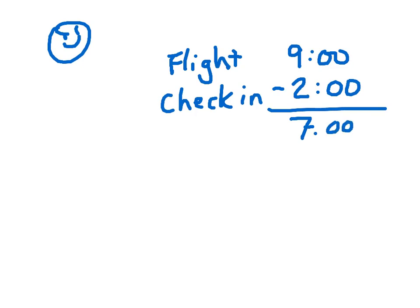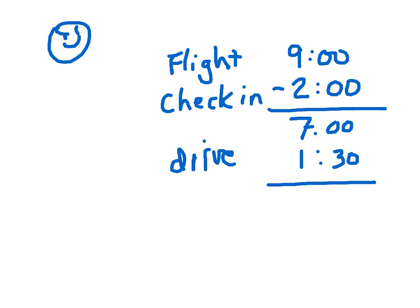And then to drive to the airport, it's going to take me about 90 minutes — that's an hour and 30 minutes. So working backward from 7 o'clock: 7 minus 1 hour would be 6 o'clock, minus another 30 minutes — 5:30 to drive there. So now we're at 5:30.